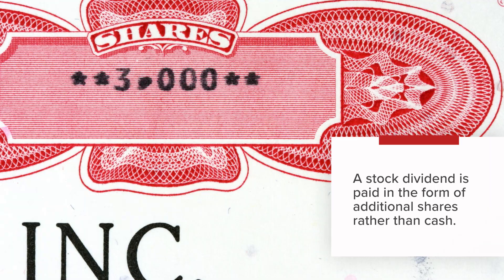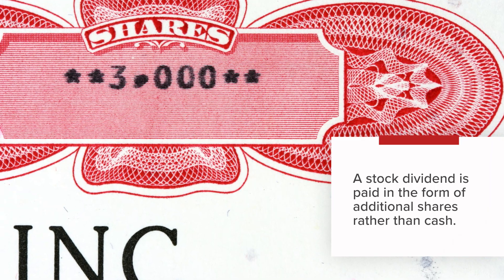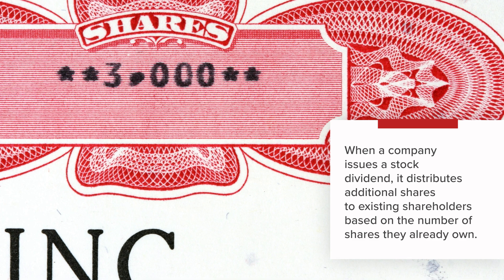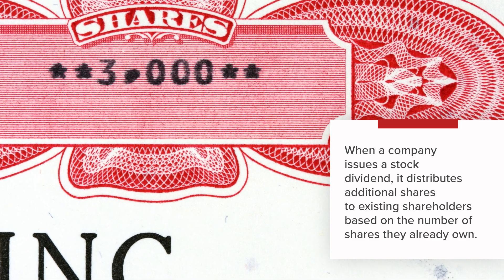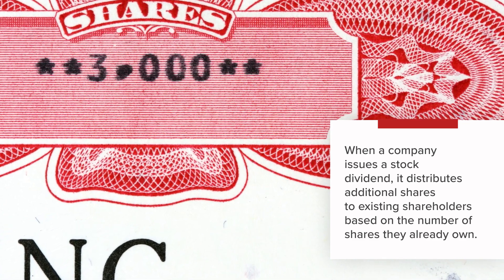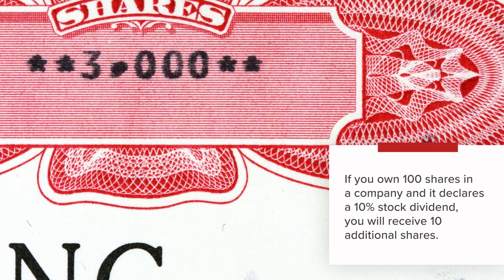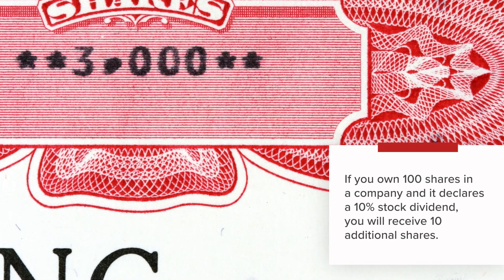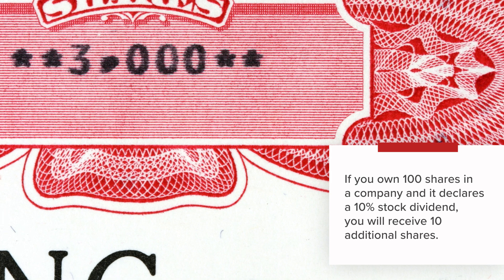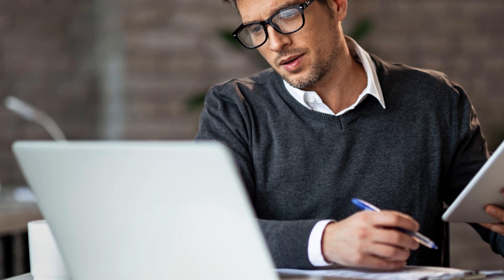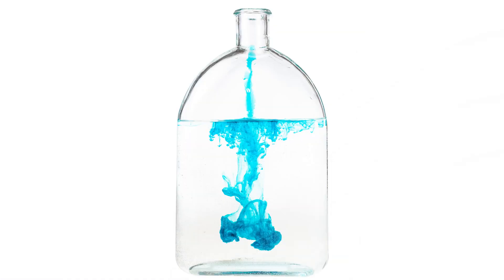On the other hand, a stock dividend is paid in the form of additional shares rather than cash. When a company issues a stock dividend, it distributes additional shares to existing shareholders based on the number of shares they already own. For instance, if you own 100 shares and the company declares a 10% stock dividend, you will receive 10 additional shares. Stock dividends do not provide immediate cash income, but they increase the number of shares a shareholder holds. This can be advantageous long-term if the company grows and the price per share appreciates. However, stock dividends can also dilute the value of each share as the total number of shares outstanding increases.